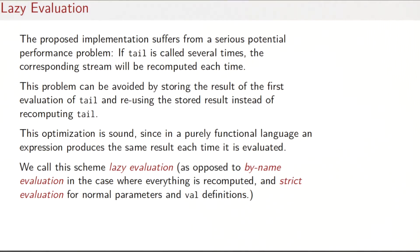Fortunately, this problem can be avoided by storing the result of the first evaluation of tail and reusing the stored result instead of recomputing it. We can convince ourselves that this optimization is sound since in a purely functional language an expression produces the same result each time it is evaluated. So instead of re-evaluating the same expression several times, we could just squirrel away the first time we have produced a result and reuse that result every other time.